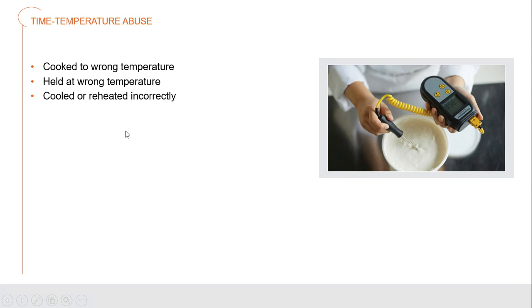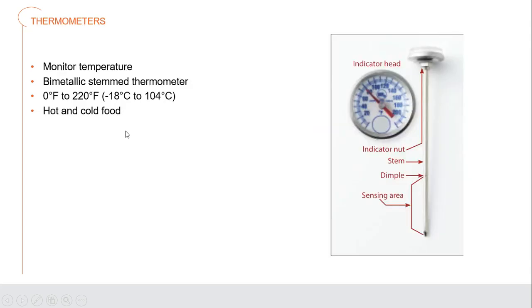If food is held at the wrong temperature, that's also a problem. Cold holding must be 41°F or below — 45°F is still cold but not cold enough. For hot holding, 135°F is the top of the temperature danger zone; if food is kept at 130°F, bacteria are enjoying themselves. We must keep hot food above 135°F, though keeping it too hot for too long will dry it out. Cooling and reheating food must also be done correctly to avoid keeping food in the danger zone too long.